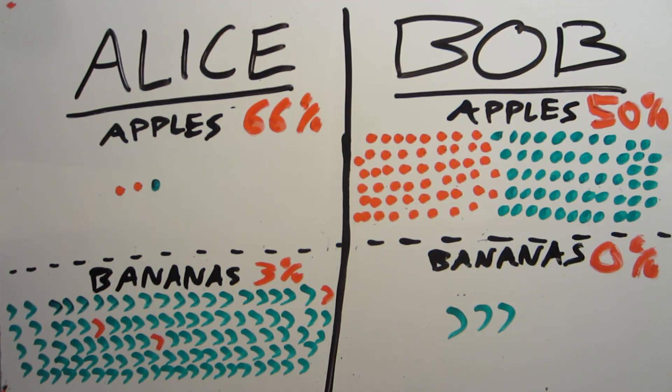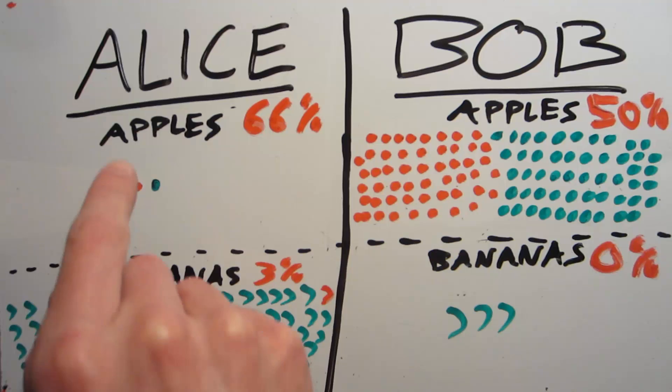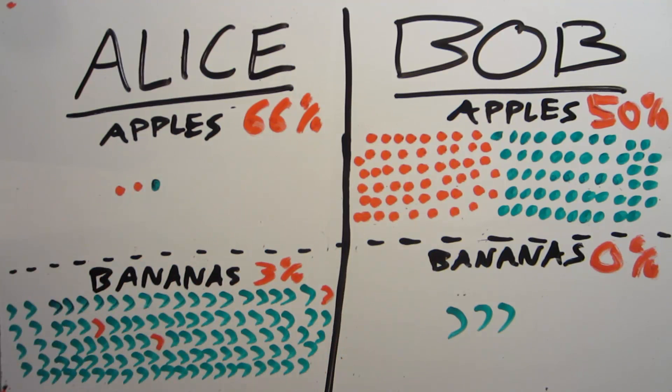Now the thing is that these statistics aren't wrong. If you want a banana, you should go to Bob, because you have 0% chance of getting a bad banana. And if you want an apple, you should also go to Bob, because 50% of the time you'll get a good apple, whereas at Alice's cart, you only have a 1 in 3 chance of getting a good apple.